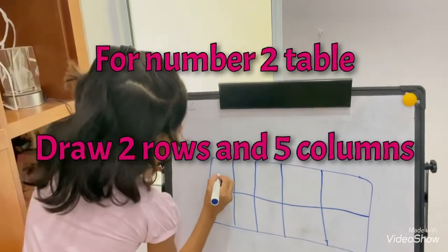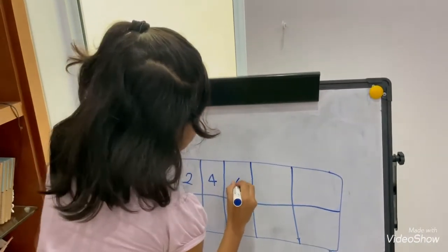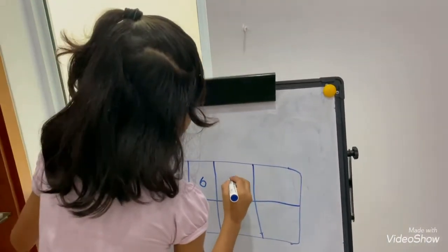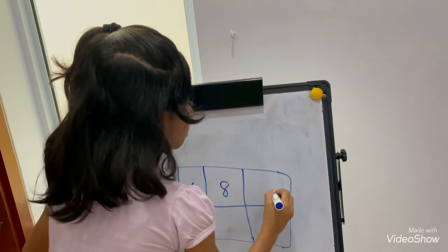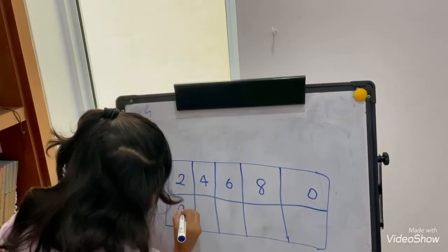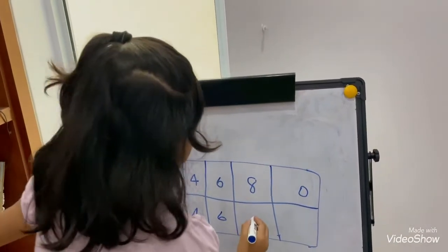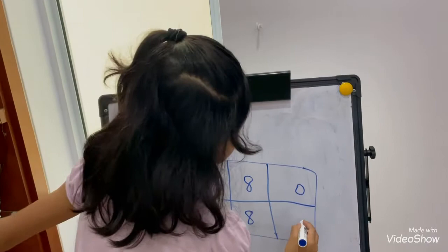Here you have to draw 2, 4, 6, 8 and 0. And again we have to draw 2, 4, 6, 8, 0.